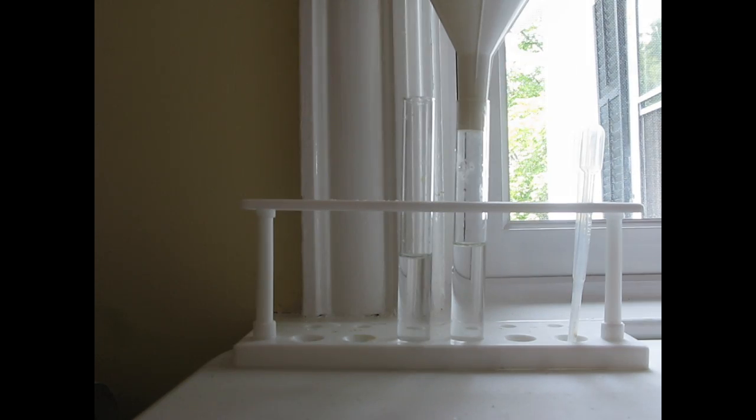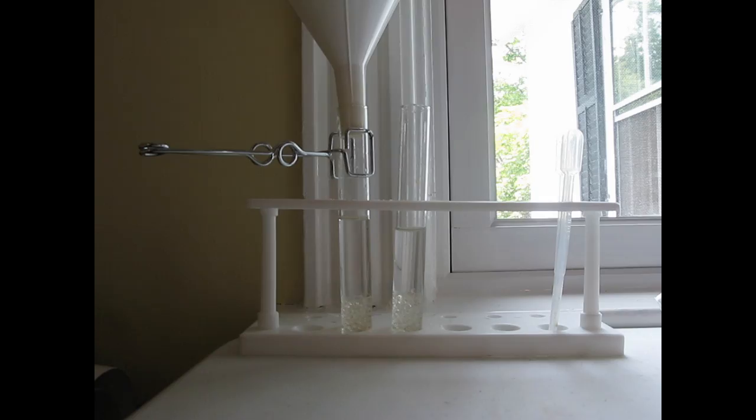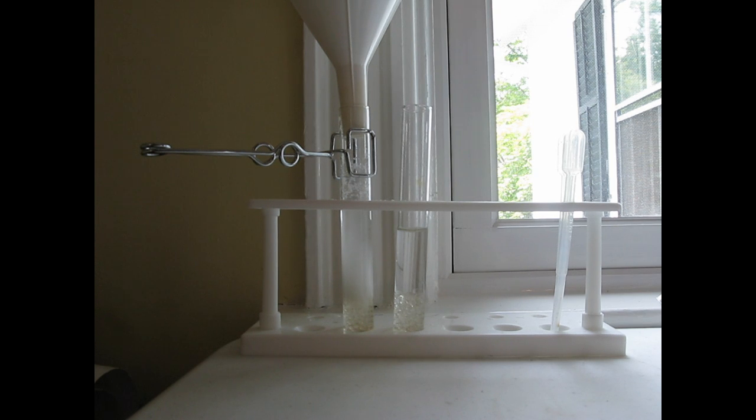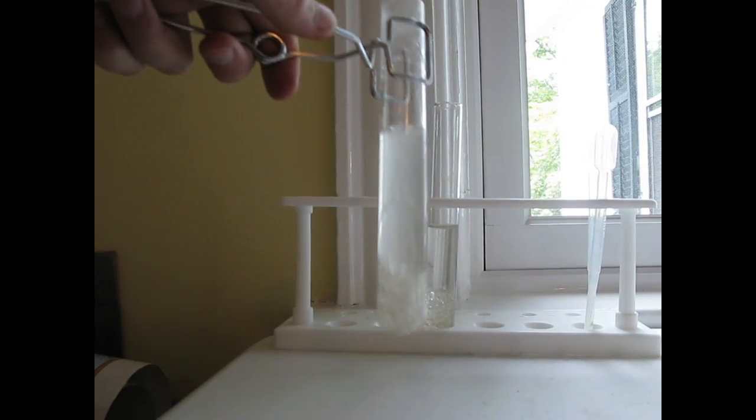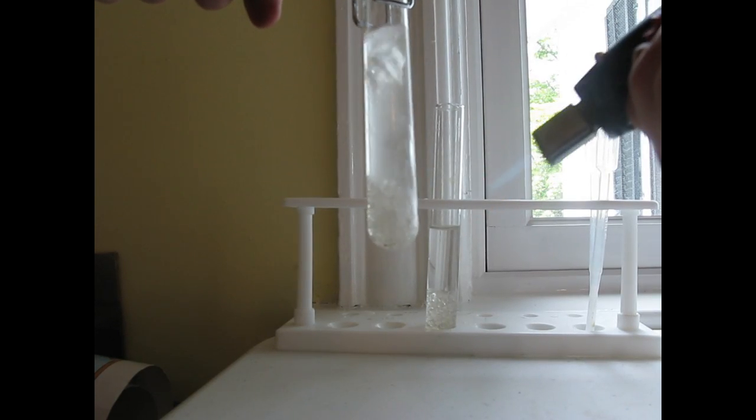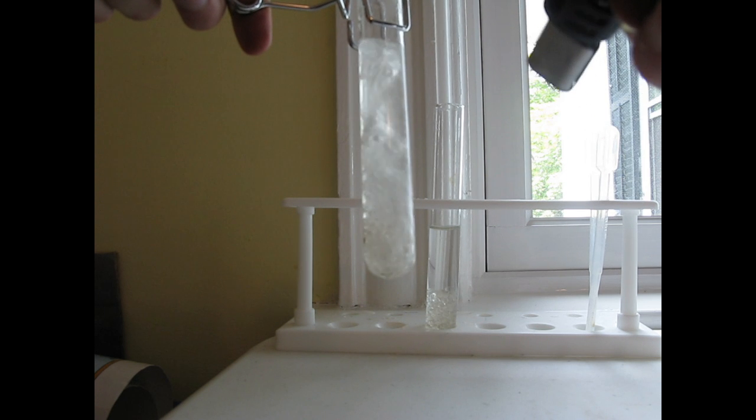Then measure out the silica gel into the test tubes or tube. Then for every three grams of silica gel add in two grams of sodium hydroxide. Then heat up the test tube with a torch of some sort.